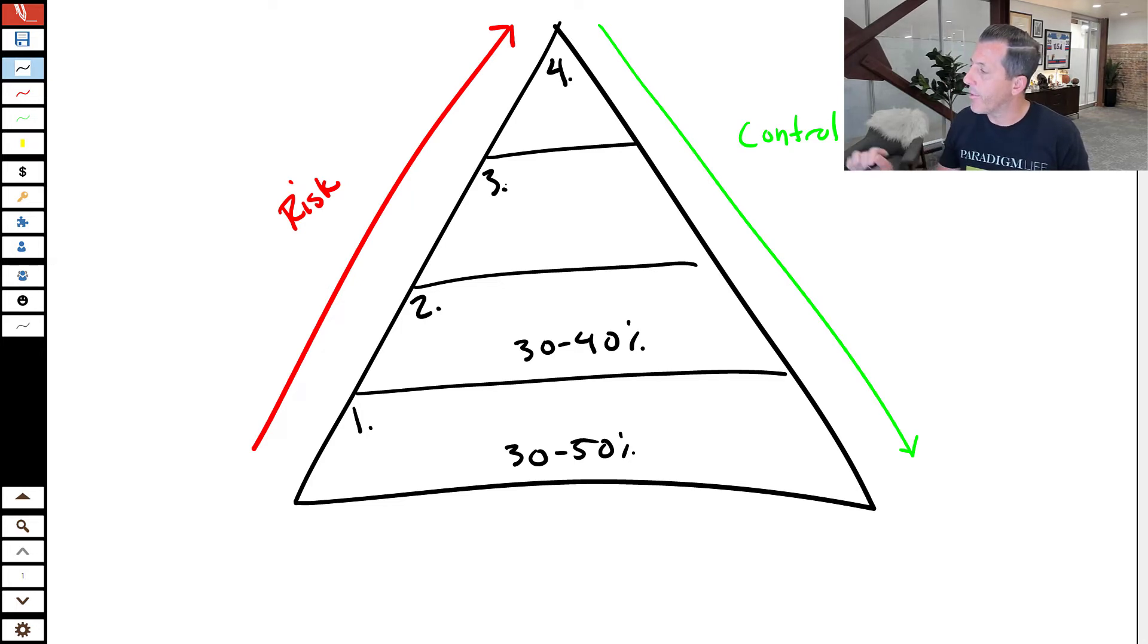And in tier three, this is a little bit less, which is 10 to 20% of wealth. And then here in tier four, zero to 5% of overall wealth. We look at this being able to produce really good returns and overall achieve a lot of wealth over the long term without taking a lot of risk.